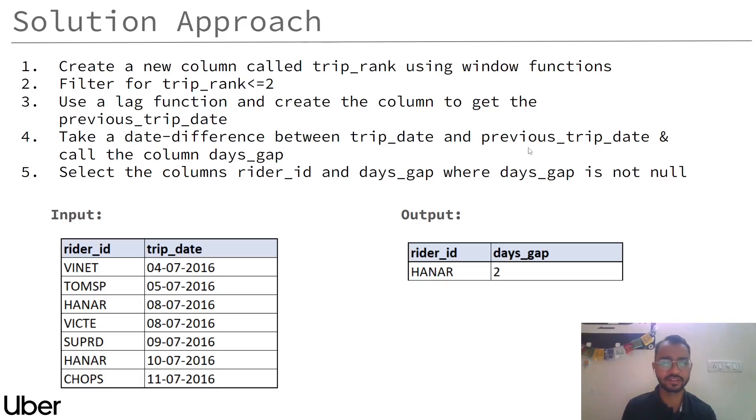After that, I will be taking a difference of my trip date and my previous trip date. There will be nulls in this data as the first trip of every rider will not have a previous trip. So after that, I will be selecting only those cases where my days_gap is not null, so that I get my rider_id and my days_gap, which is this output.